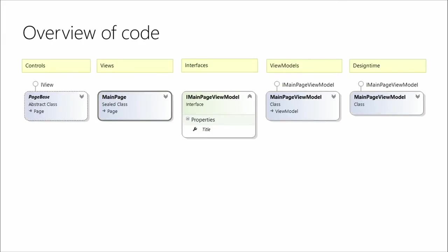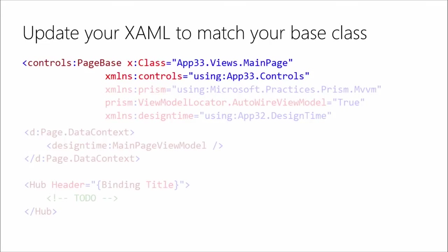Here it is all laid out — this would be the starting place of just the simplest app, just a main page that shows the title. It starts to build everything out in the right structure. Let's look at how it's actually implemented inside the XAML. The first thing you do is change the XAML's page tag. Remember, as soon as you create a page it inherits from Page — we're going to change that to inherit from our new base class.